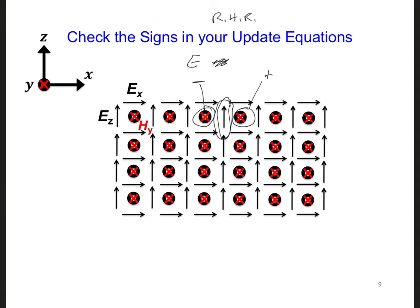You can use the same right-hand rule approach to check the signs for the field components in the EX updating equation. For the magnetic field component, because of Lenz's law, there's an extra minus sign in Faraday's law in comparison to Ampere's law. As a result,